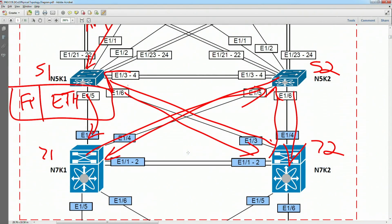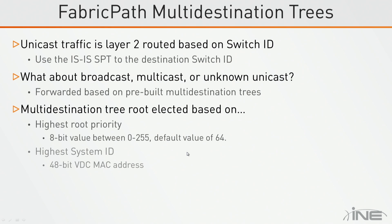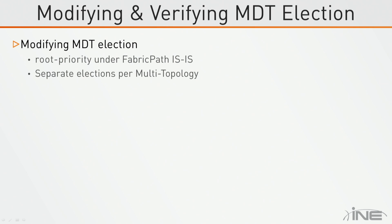Instead, the way they handled it was to elect a root switch using similar logic to what you would see in regular spanning tree. A multi-destination root is going to be based on a priority value, the system ID, and then the switch identifier — and they choose higher values as opposed to lower values, unlike spanning tree. The system ID cannot be changed because it's the MAC address. The switch ID can be changed, as we saw in global config Fabric Path switch identifier. The root priority can be modified under the global ISIS process, and there's going to be a separate election per multi-topology.